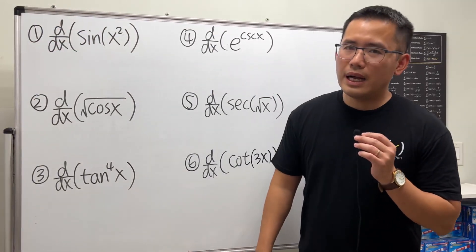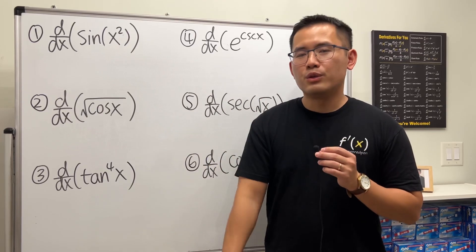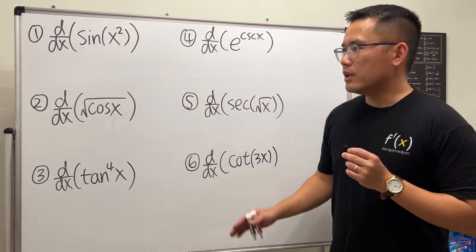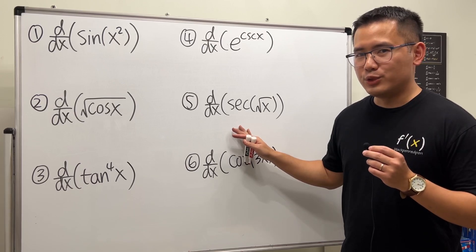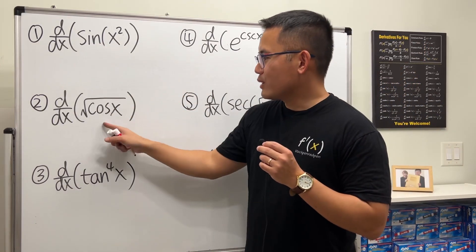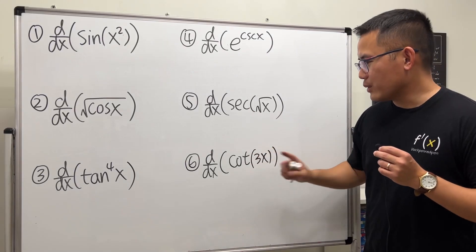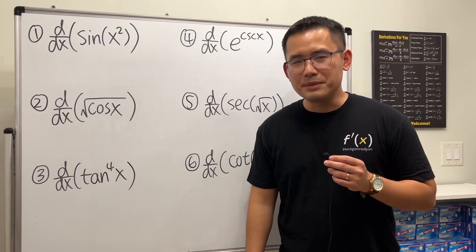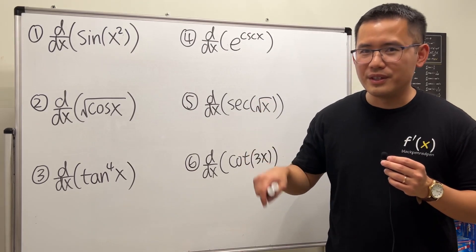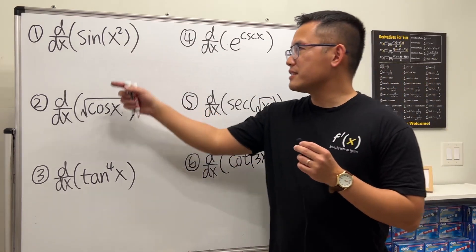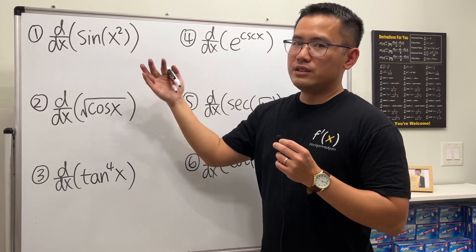In this calculus tutorial, I will show you how to use the chain rule one time to find the derivative. We will also need to know the derivatives of all the trig functions: sine, cosine, tangent, cosecant, secant, and cotangent. If you want tips on how to remember these derivatives, check the video in the description. Let's get started — we have sine of x squared.